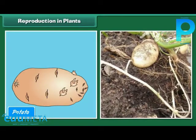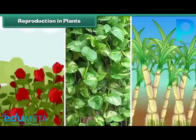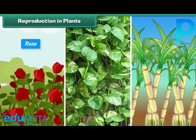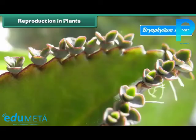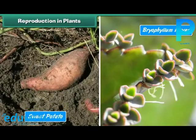For example, potato can be developed from an underground stem having buds on it. Rose, money plant, and sugar cane can be developed from stem cuttings. Bryophyllum can be developed from its leaves. Sweet potato grows from its roots.